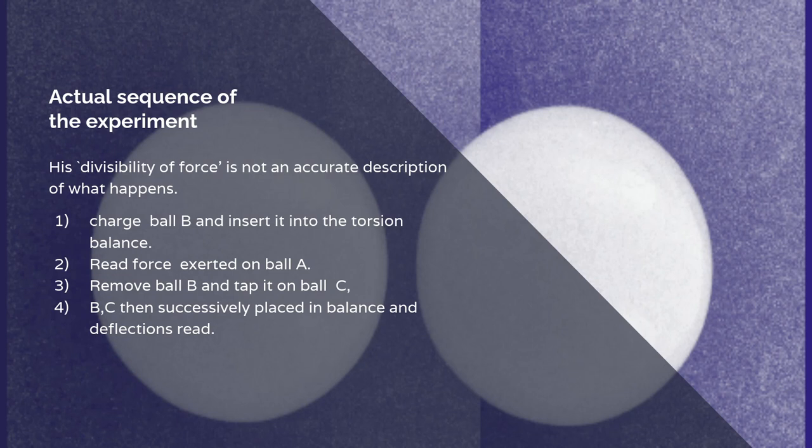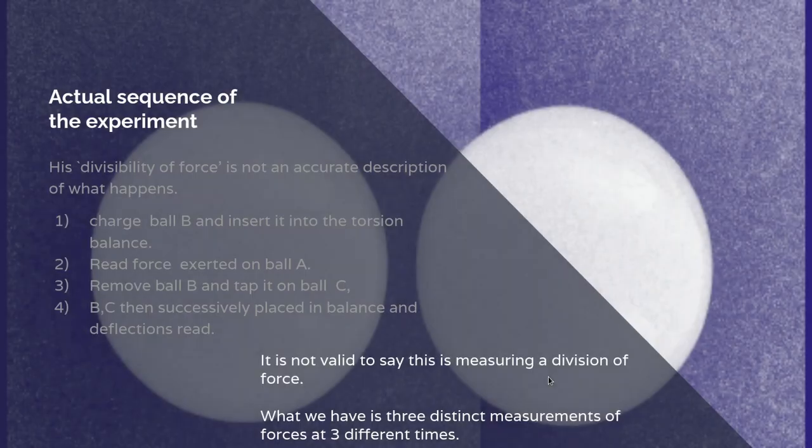But even within that context, the simile and the incorrect simile is his, when he talks of the divisibility of force. Because that's not actually what happened in Coulomb's experiment. First he charged ball B, inserted it into the torsion balance. This is what Coulomb did. And he read off the force exerted on ball A. He then removed ball B and tapped it on ball C, and puts balls B and C successively in his torsion balance, and read off the deflections. So these were three successive readings. It's not valid to say this is measuring a division of force. What we have is three distinct measurements of forces at three different times.